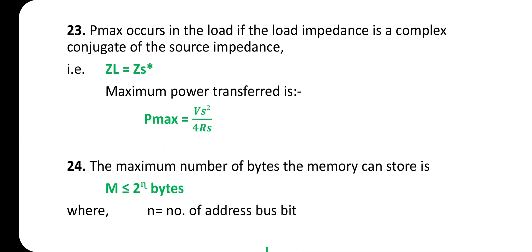Twenty-third one: Maximum power (P_max) occurs in the load if the load impedance is the complex conjugate of the source impedance, i.e., Z_L = Z_S*. Maximum power transfer to the load: P_max = V² / (4R_S).